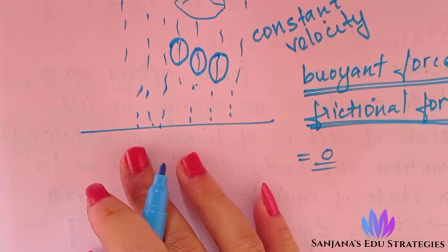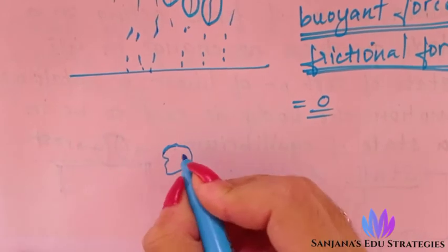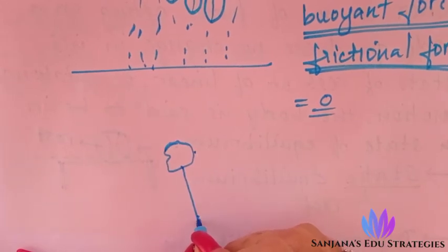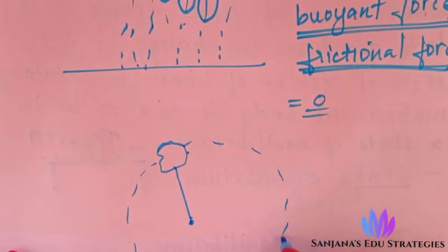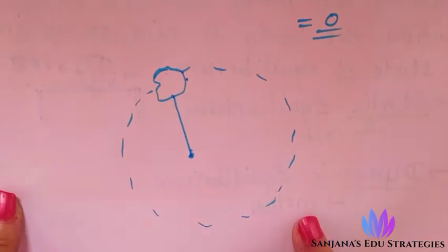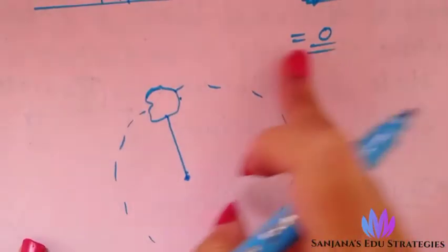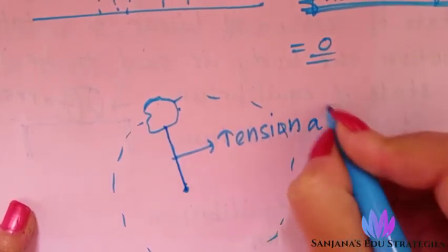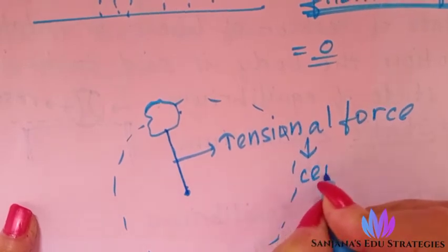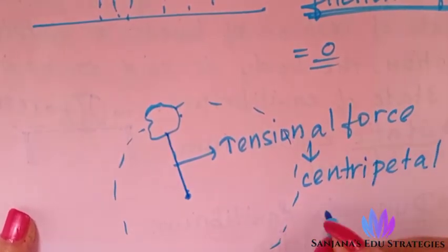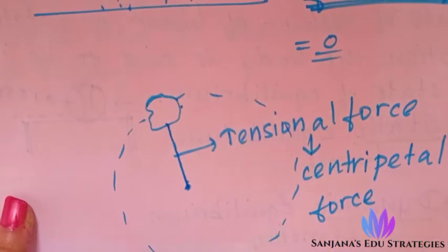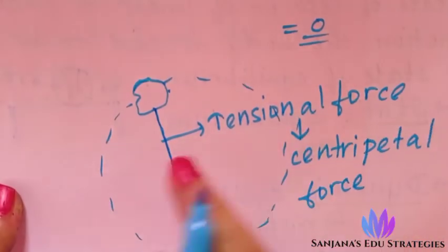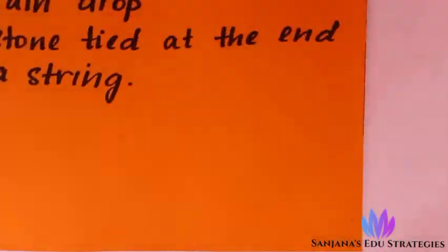The next example is a stone tied at the end of a string. A person holds the string and rolls it, causing the stone to move in a circular path at uniform speed. The string has tension in it, and this tensional force provides the centripetal force for the circular motion of the stone. So the tensional force of the string is offering the centripetal force needed for the stone to move in a circular path.